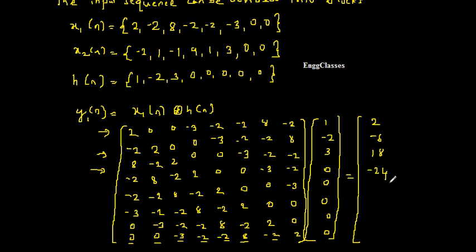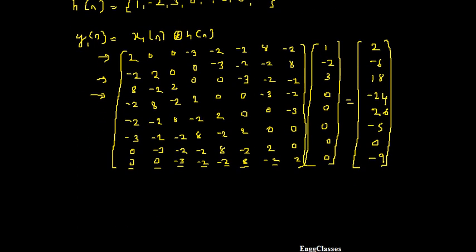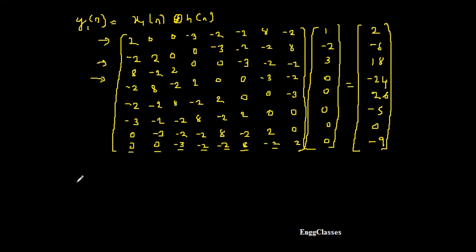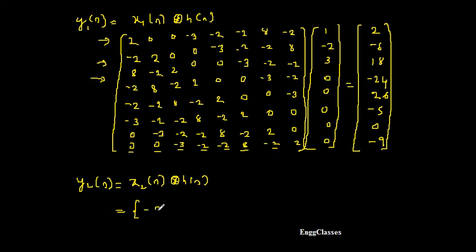Continuing the row-by-row multiplication, y1[n] = {2, −6, 18, −24, 26, −5, 0, −9}. Similarly, y2[n] = x2[n] circularly convolved with h[n]. I recommend you compute y2[n] on your own to save time; the result is y2[n] = {−2, 5, −9, 14, −20, 28, −3, 9}.